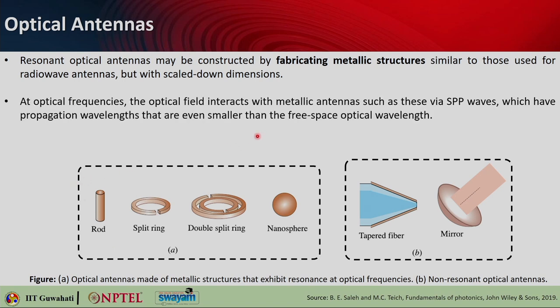At optical frequencies, the optical field interacts with metallic antennas such as rod splitrings, double splitrings, or nanospheres via SPP — surface plasmon polariton — waves, which have a propagation wavelength much smaller than the free space optical wavelength. Because surface plasmons have very large wave numbers, they support very tiny wavelengths, allowing manipulation and guiding of electromagnetic radiation in much sub-wavelength dimensions. The length of an optical quarter-wave dipole antenna lies in the nanometer regime.